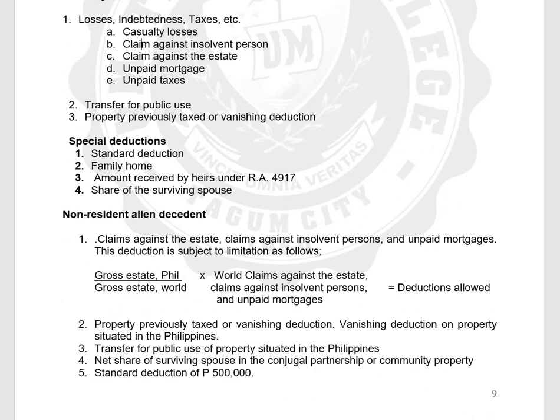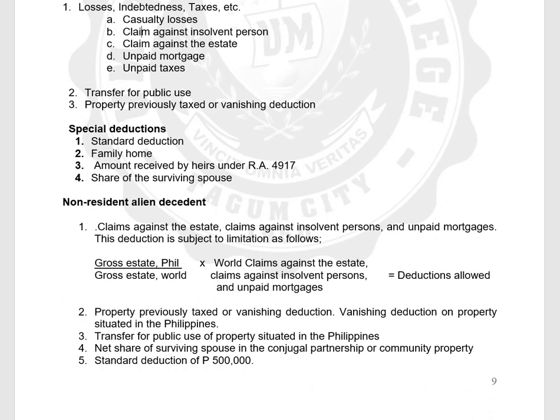You also have the allowed deduction for a non-resident alien decedent. A non-resident alien (NRA) is also allowed to deduct claims against insolvent persons, claims against the estate, and unpaid mortgage, but subject to limitation.